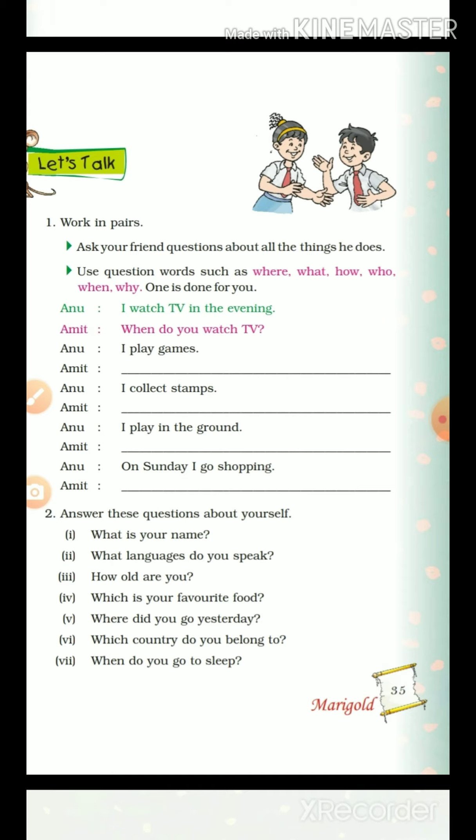So, these are 6 question words. Now, what do we have to do in this exercise? There are two children — Anu and Amit. They both are talking. We have been given the answers given by Anu, and we have to write the questions asked by Amit — what questions Amit must have asked to which Anu gave those answers. So, let's start.